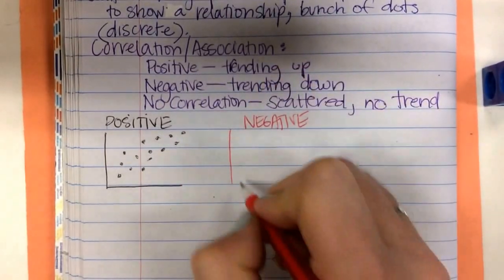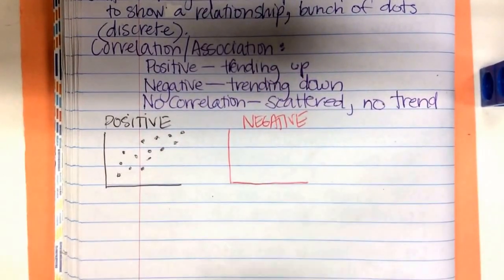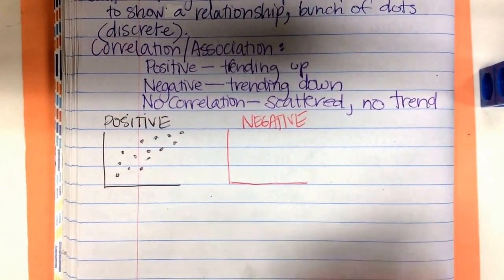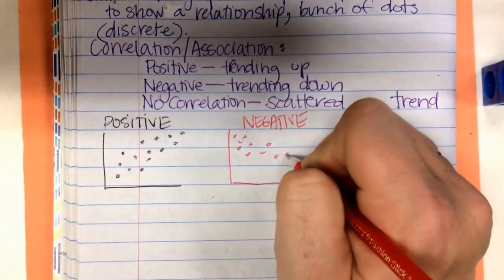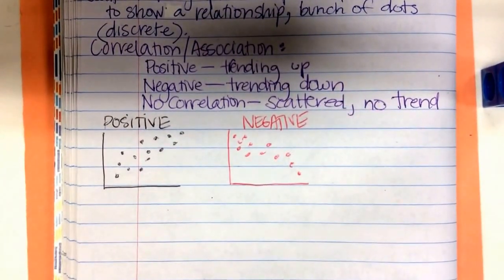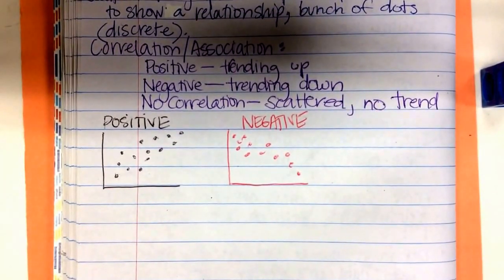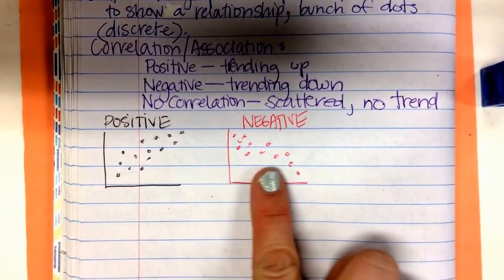A negative correlation is going to do the opposite. It's going to start out higher. But as you move across the graph, the data will come lower, will drop.